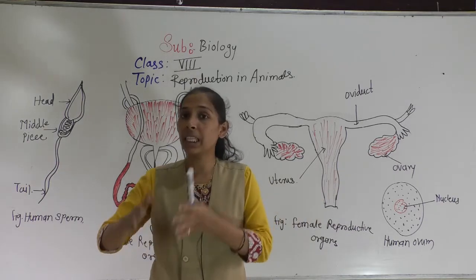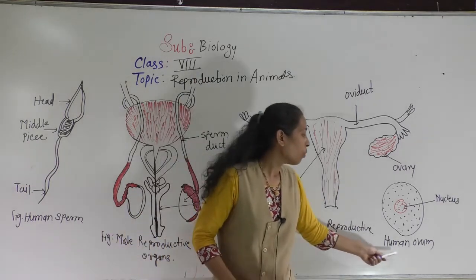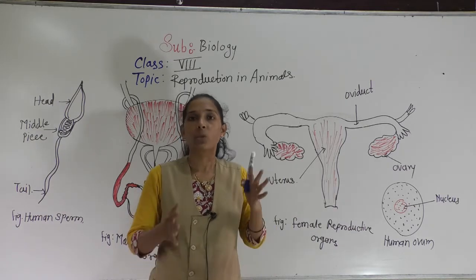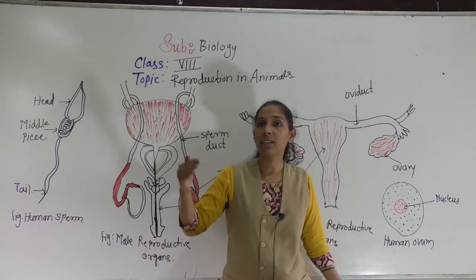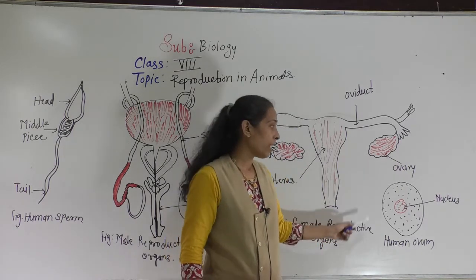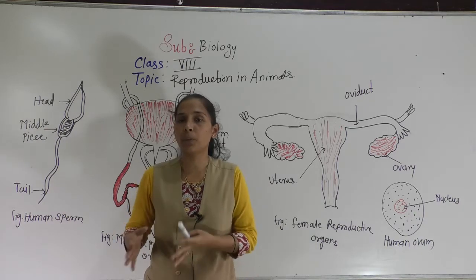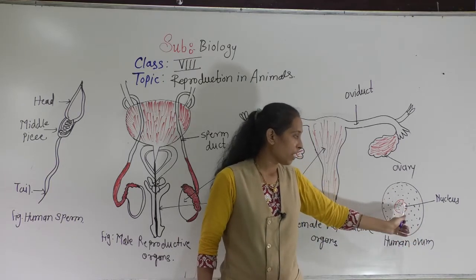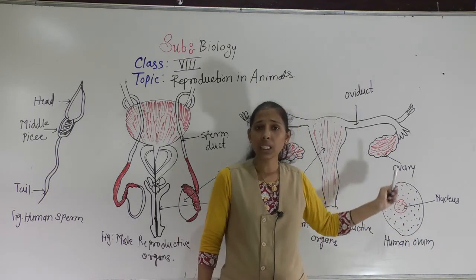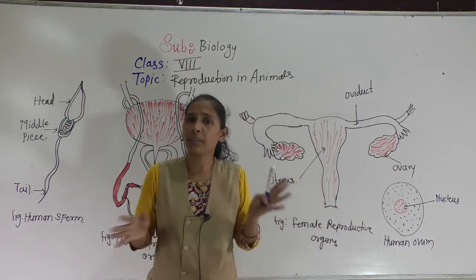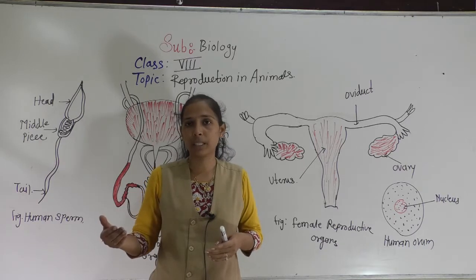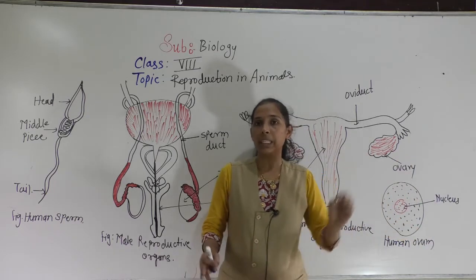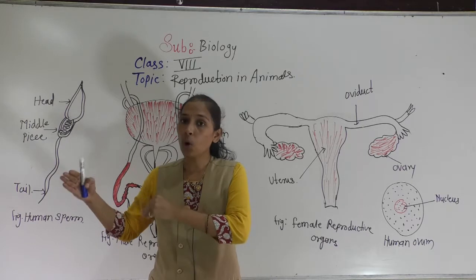Like the sperm, the human ovum is also a single cell, but it is quite bigger than the sperm. The human ovum contains all the basic components of a cell. Here in the diagram of the human ovum, you can see the nucleus, cytoplasm, and cell membrane. All the usual components present in a basic cell are present in the human ovum.